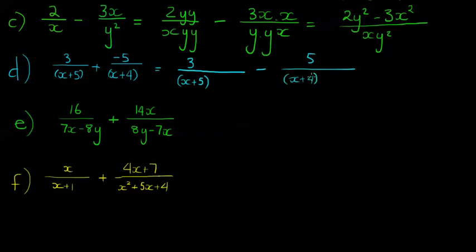That negative 5 can just change this positive into negative 5 over x plus 4. x plus 4, again, cannot be further factorized, so it represents a factor, a prime factor in itself. I need to have the factors x plus 5 and x plus 4. This one needs the x plus 4, so I multiply the numerator and denominator with the missing factor, and this one needs the x plus 5, so numerator and denominators multiplied with x plus 5.